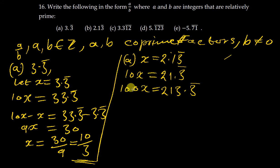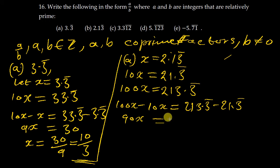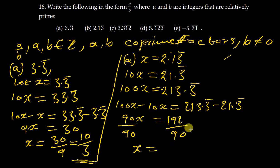On the right side, 100x equals 213.3 bar. We subtract: 100x minus 10x equals 213.3 bar minus 21.3 bar, giving us 90x equals 192. We divide everything by 90, and when you simplify by finding the common factor, the answer reduces to 35 over 15.